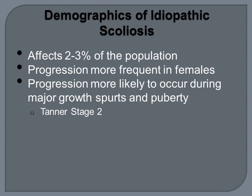Idiopathic scoliosis affects 2-3% of the population and is most often seen in females. Progression of the curves is also more frequent in females and most likely to occur during a major growth spurt or during Tanner Stage 2 of puberty, which is when the breasts and pubic hair start to develop.